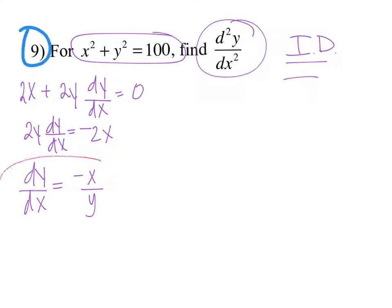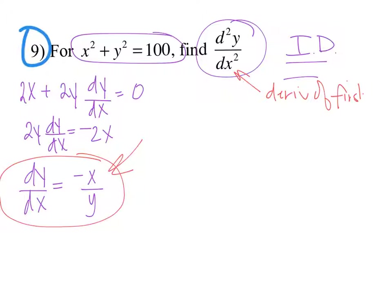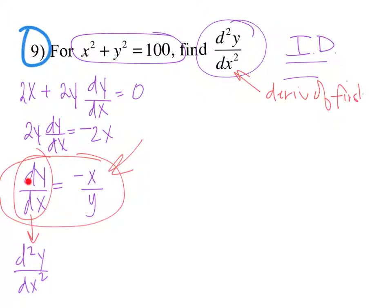That's the first derivative. Remember that the second derivative is the derivative of the first derivative. Now that we have the first derivative and we've isolated dy/dx, we are ready to take the second derivative. The derivative of dy/dx is the second derivative — d²y/dx². The derivative of the first derivative is the second derivative. We've derived the left; now let's derive the right using the quotient rule.